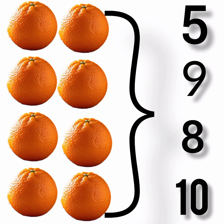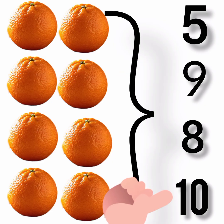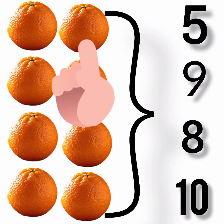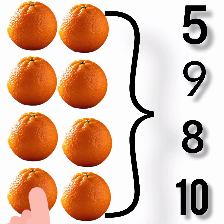On the screen now, we see oranges. How many oranges do we have here? We have different options. Are the oranges 5? Do we have 9 oranges? Is it 8? Is it 10? To know the number of oranges we have, we'll count the oranges. So let's count: 1, 2, 3, 4, 5, 6, 7, 8. So we have 8 oranges. Now let's match the oranges to the correct number. That's good.